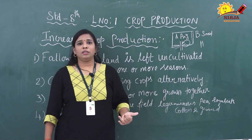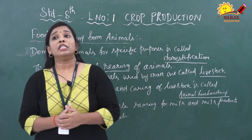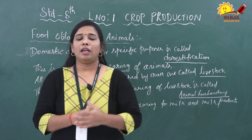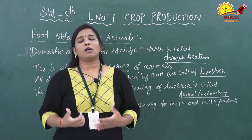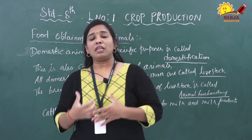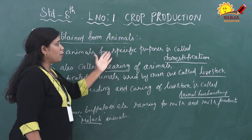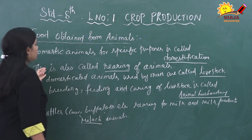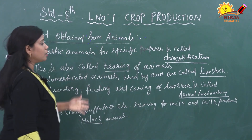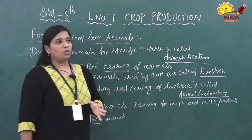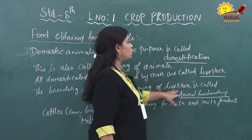Next, we are going to discuss food obtained from animals. Like plants, animals also give us different types of food materials, particularly cattle like cows, buffaloes, and sheep. These animals give us milk as well as milk products and are used for different purposes. The rearing and maintaining of animals is called animal husbandry. The domestic animals kept for specific purposes is called domestication. All domesticated animals used by humans are called livestock. The breeding, feeding, and caring of livestock is called animal husbandry.